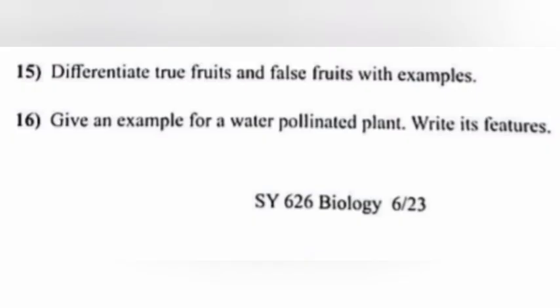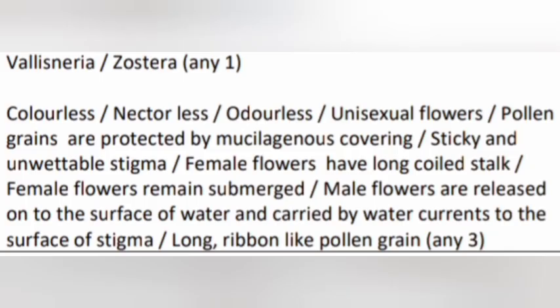Question 16: Give an example for a water-pollinated plant and write its features. Answer: Vallisneria or Zostera. Features: colorless, nectarless, odorless, unisexual flowers. Pollen grains are protected by a mucilaginous covering. Male flowers are released onto the surface of water and carried by water currents to the surface of the stigma.